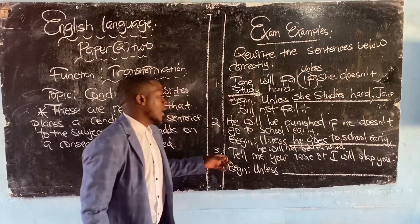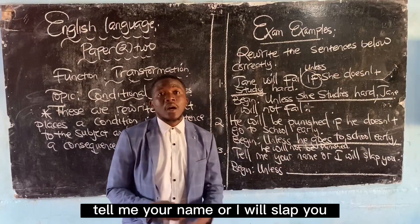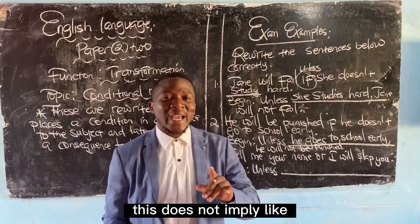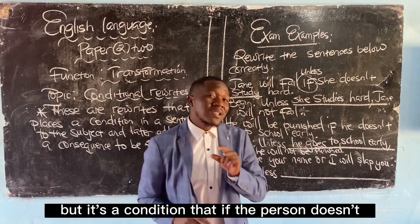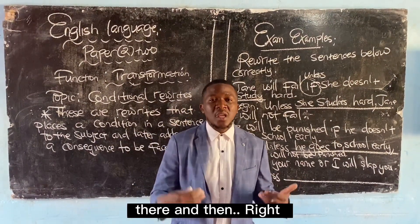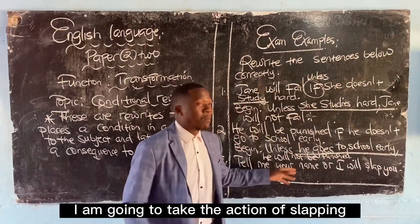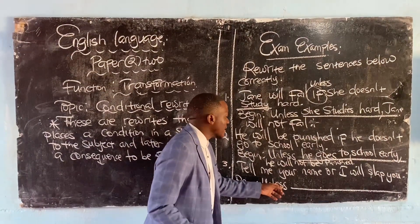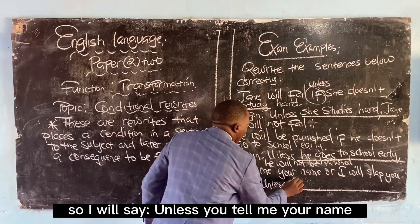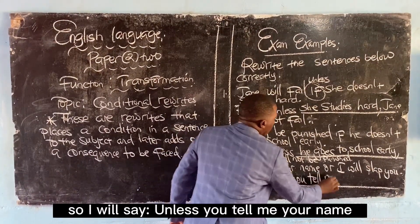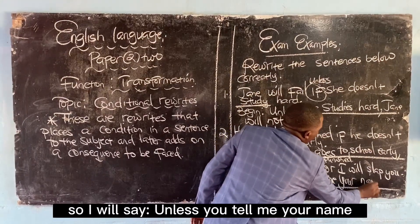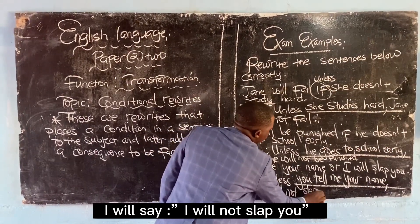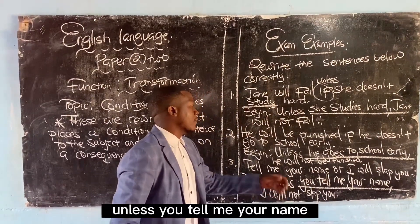Number three: Tell me your name or I will slap you. This does not imply I have already slapped the person, but it's a condition — if the person doesn't tell me the name right now, I am going to take the action of slapping. Mind you, it might just be a threat. Begin 'unless,' so I will start with what the person has to comply with. Unless you tell me your name, I will not slap you.